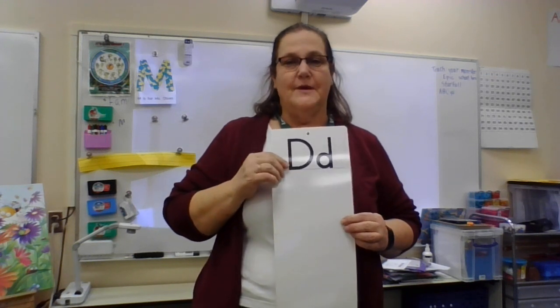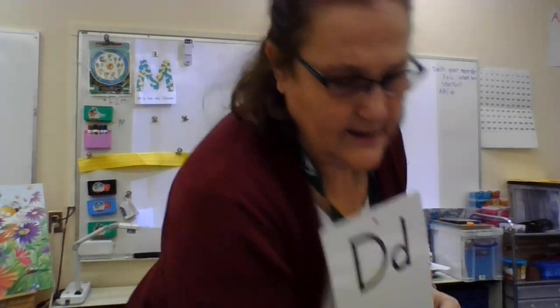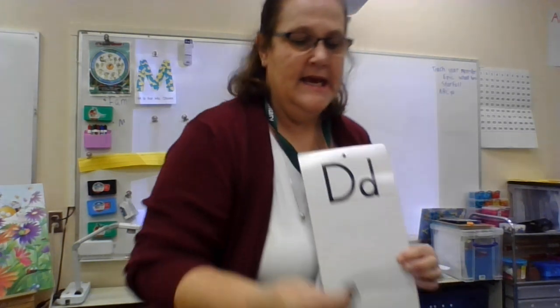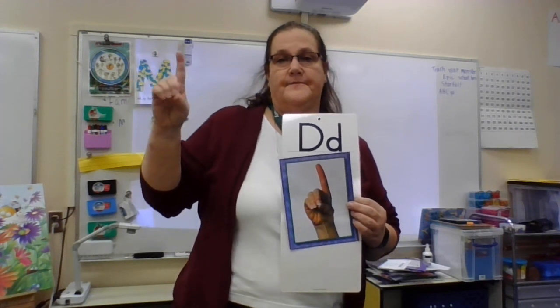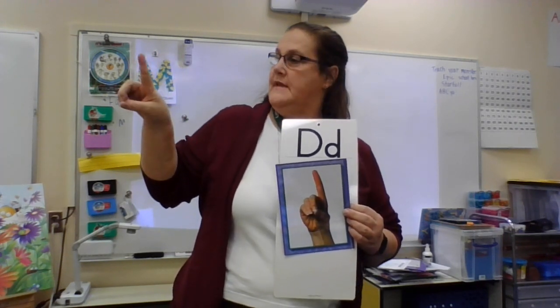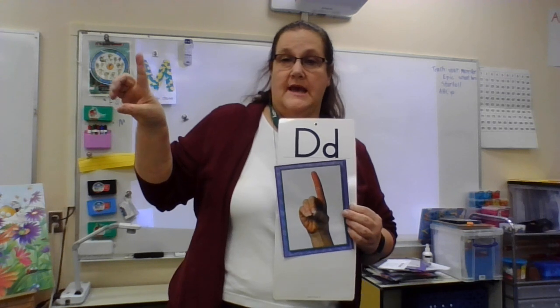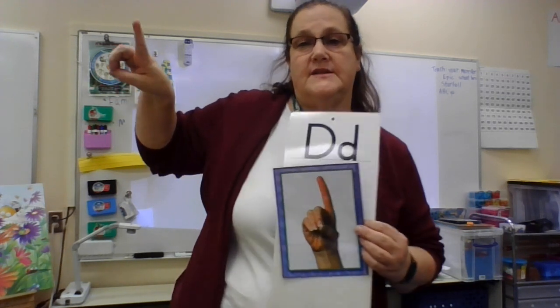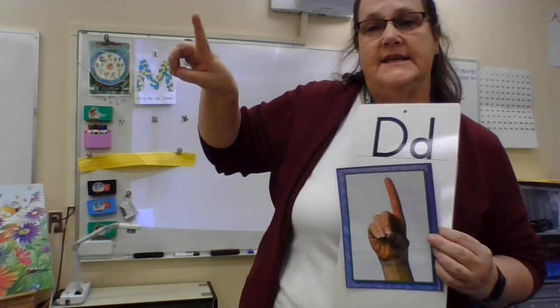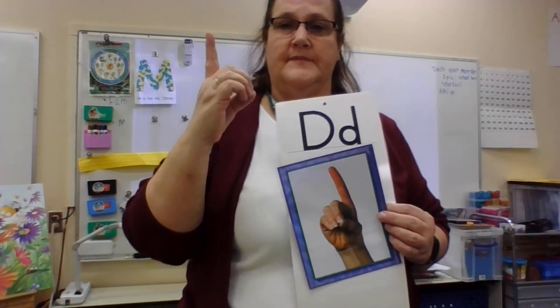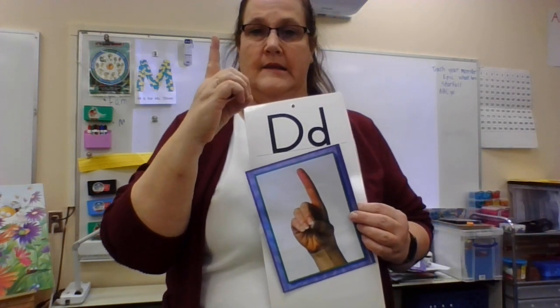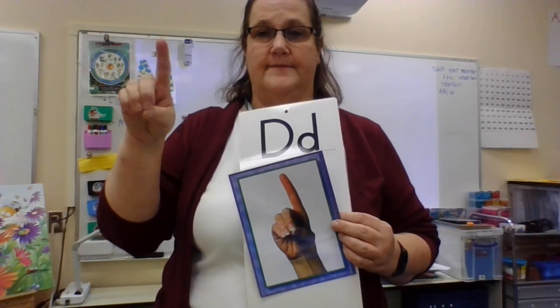The way that we make the sign for the letter D is we use our right hand and make a circle with these fingers. Do you see that? And then we hold it like this. That's the letter D.